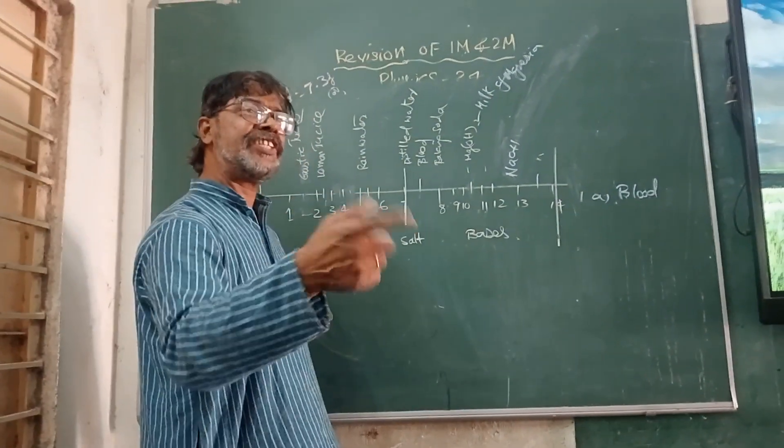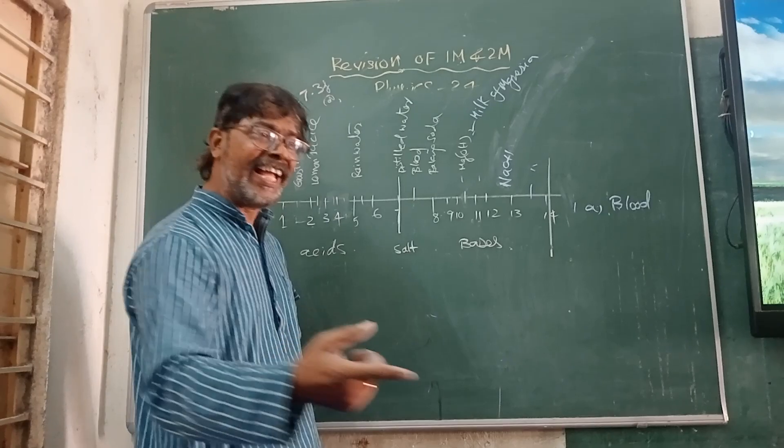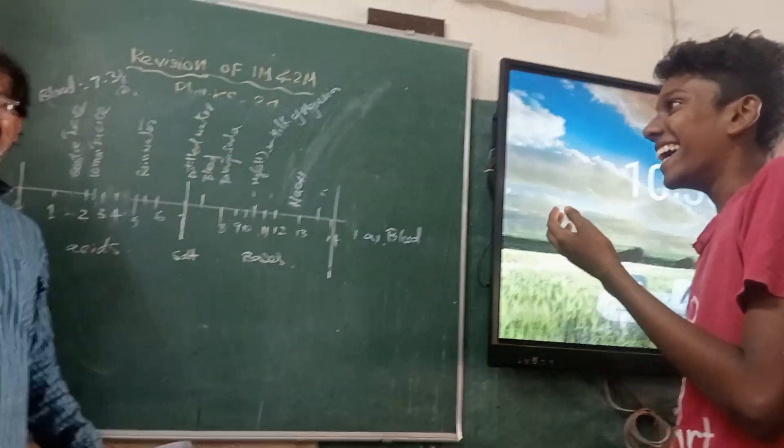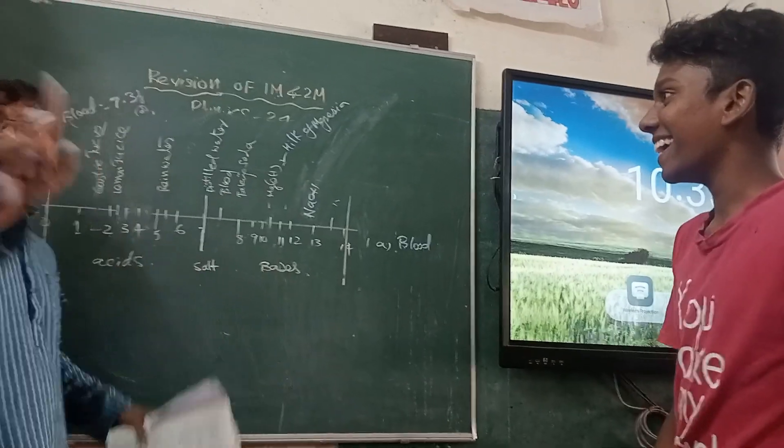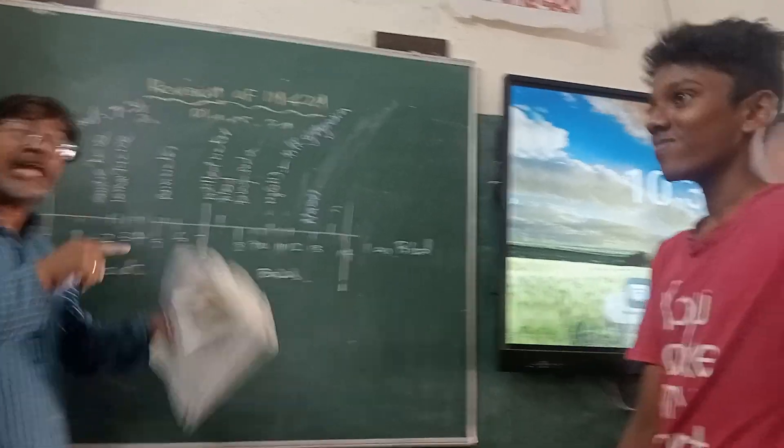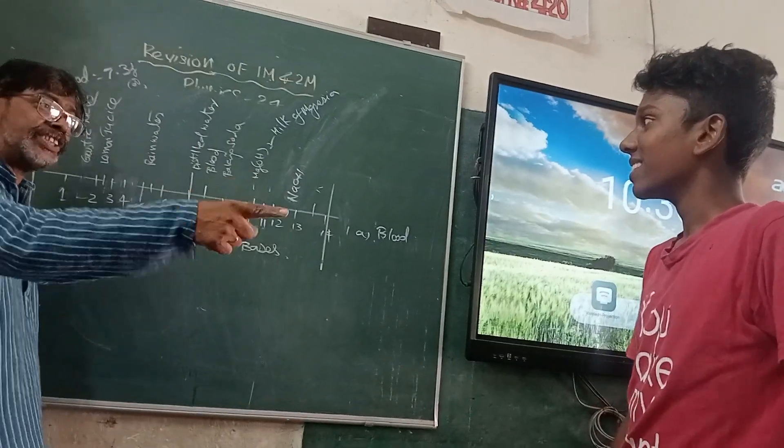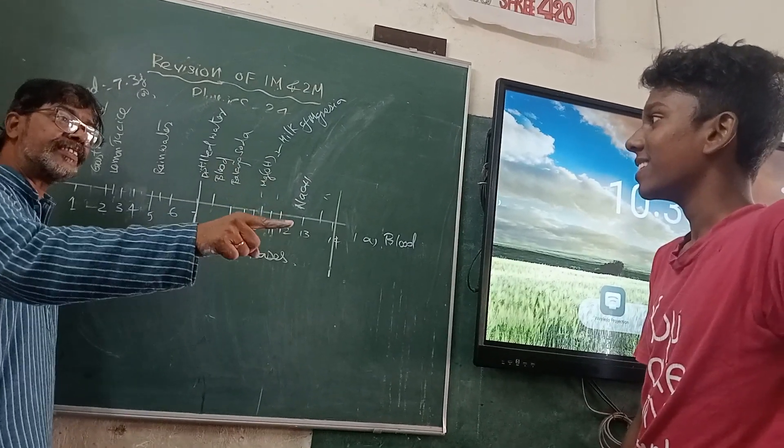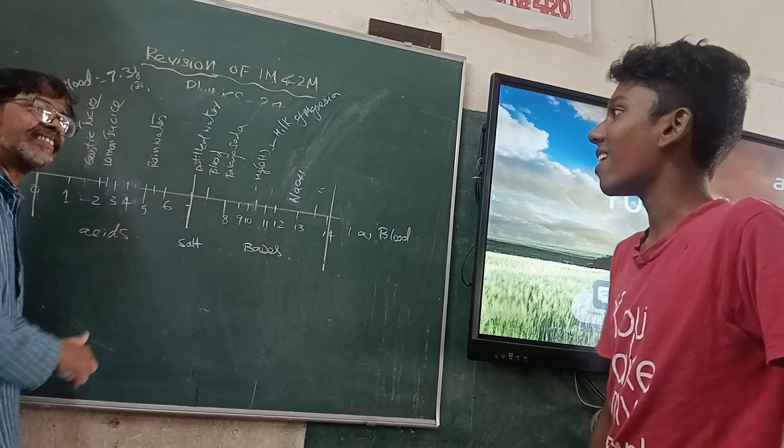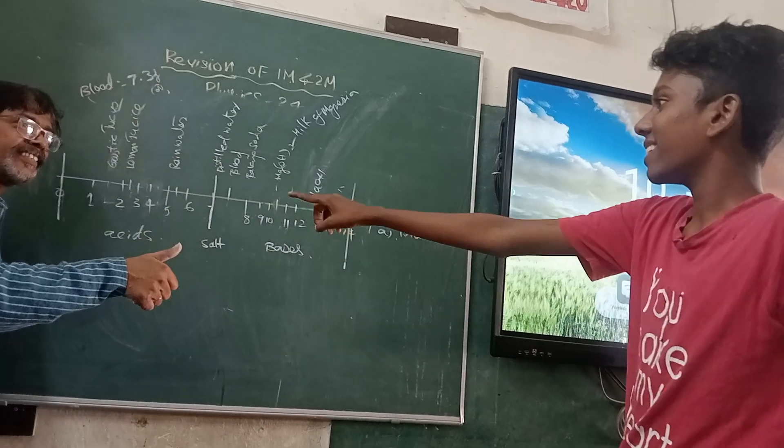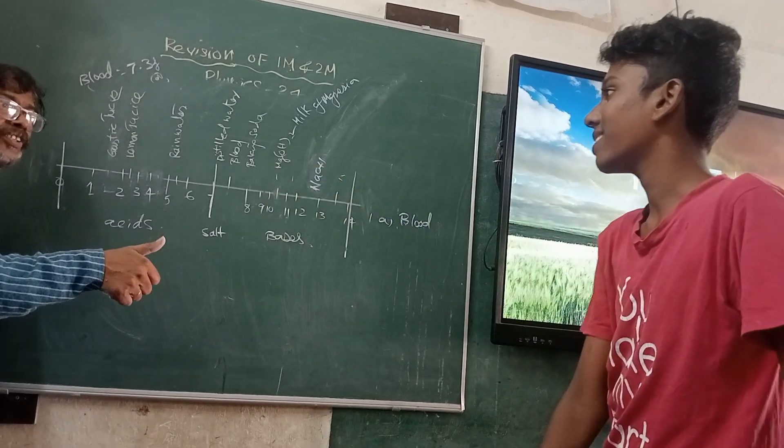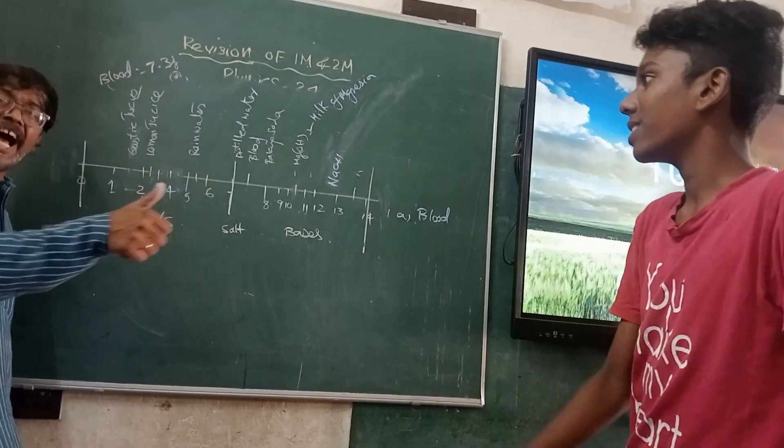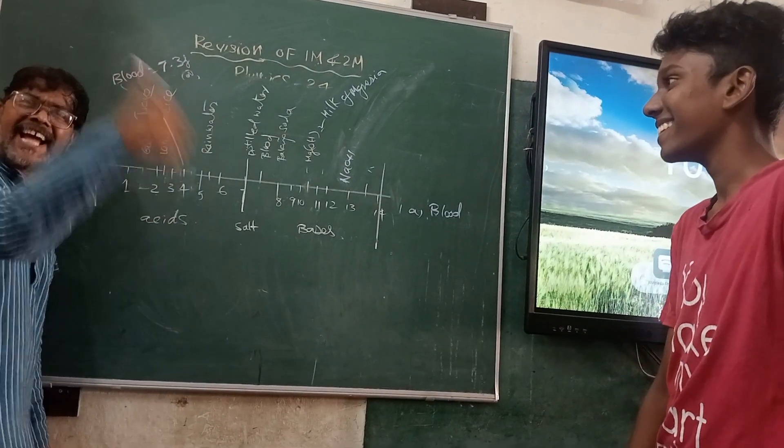Is lemon juice a strong acid or weak acid? Strong acid! Why? Because it is between 0 to 7. 0 to? 3.5. Yeah! So our Paya is correct, right? Top up!